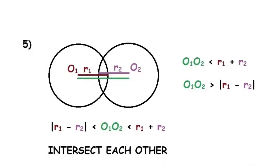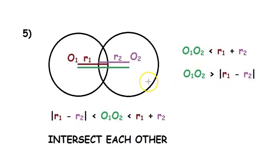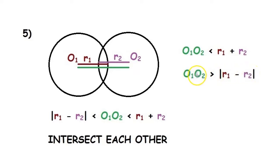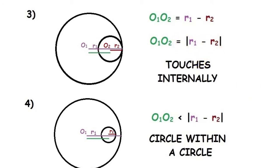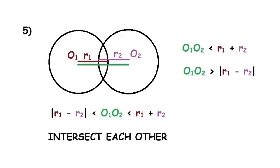The final situation is when the two circles intersect each other. Here it is obvious that the distance between the two centers is less than the sum of the radii, that is O1O2 is less than R1 plus R2. However, we cannot leave it at that. At the same time, we need to state that O1O2 is greater than the modulus of R1 minus R2, because when O1O2 equals the modulus of R1 minus R2, the two circles touch internally. So to avoid this, we state that O1O2 is greater than modulus of R1 minus R2 but less than R1 plus R2.